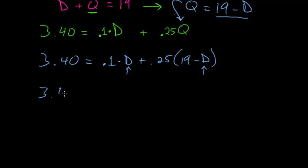Rewriting this, we have 3.40 equals 0.1 times d plus, and now I'll distribute the 0.25 to each of these. So 0.25 times 19 would be 4.75 minus 0.25 times d.